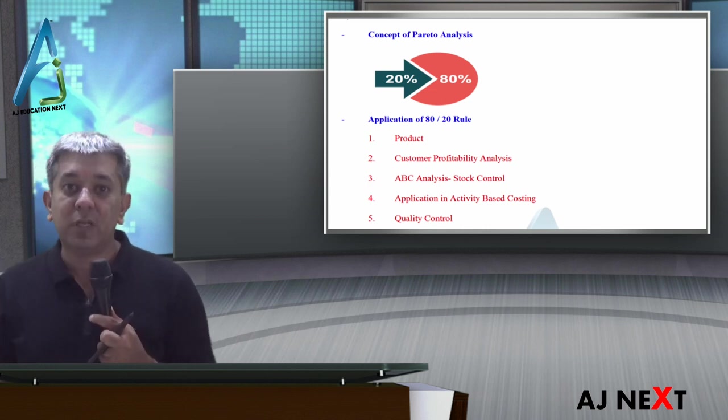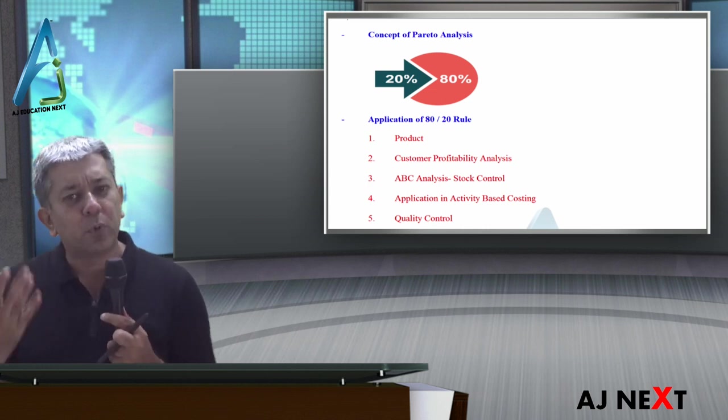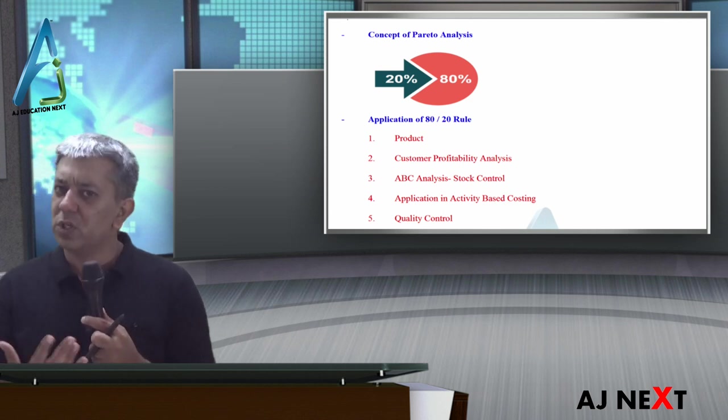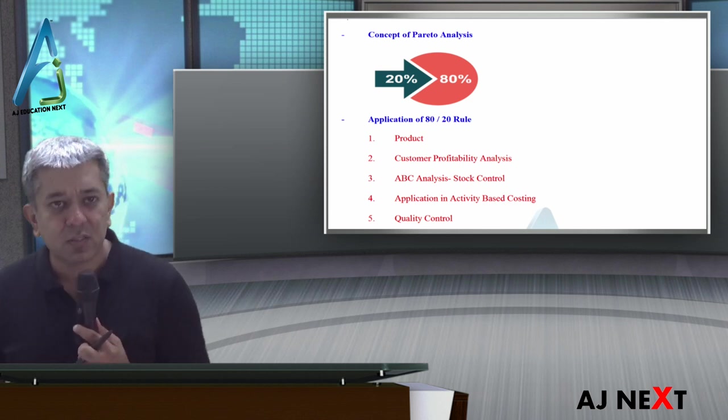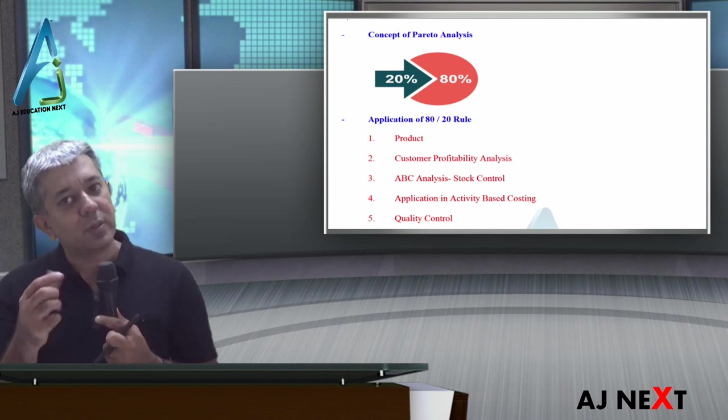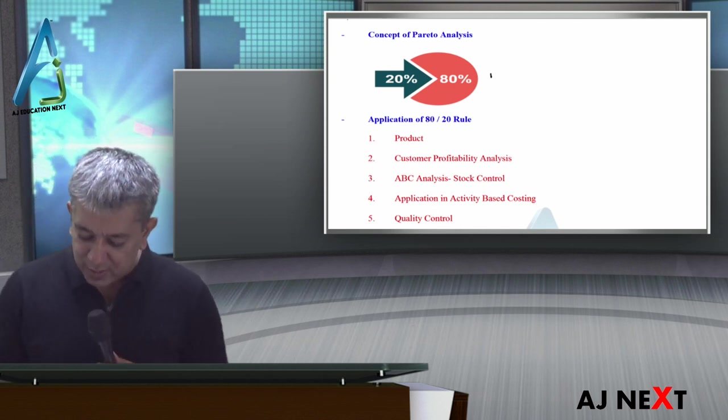Example, if you talk about Maruti company, even today a lot of their revenue comes from Alto and Swift. For them, these are very important cars. They cannot try to lose the market over here. So this is the 80-20 rule.